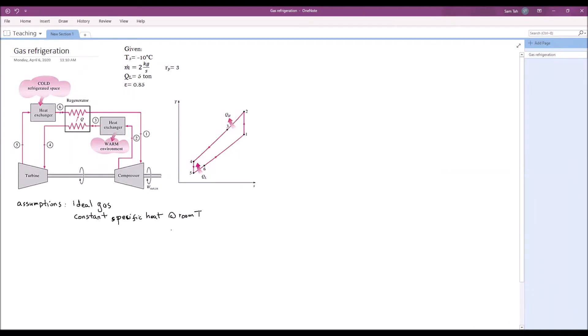So isentropic equation for the turbine is T4 over T5 equals pressure ratio to the k minus 1 over k. For T4 equals 263, this is 273 minus 10, times pressure ratio of 3 to the power of 0.4 over 1.4. That gives us 360 K. That's our T4.